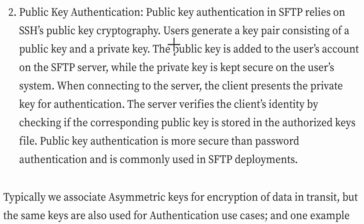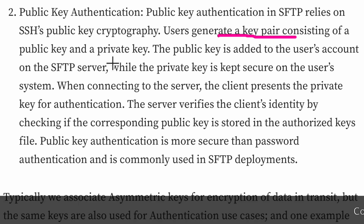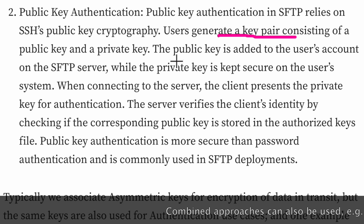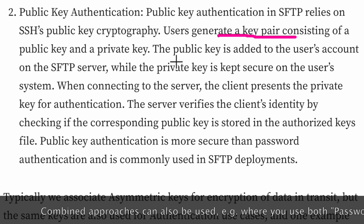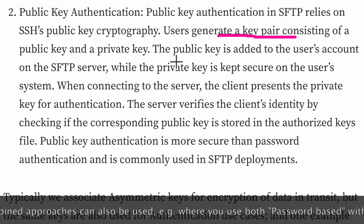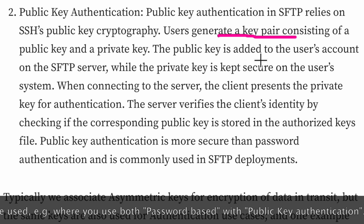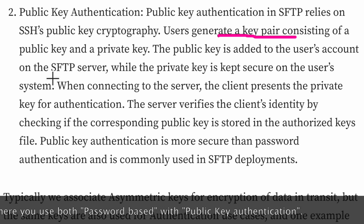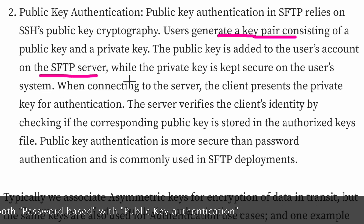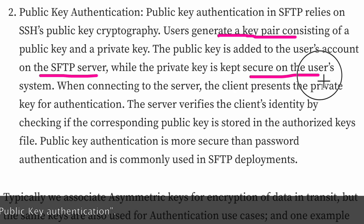So what would be the steps in public key authentication? The first step is generation of a key pair — the public and private key pair — which would be generated by the user willing to connect to the server. The public key of this pair is shared by the user to the server, and the SFTP server adds the public key to the user's account. The private key is not sent to the server; it is kept secure on the user's system.